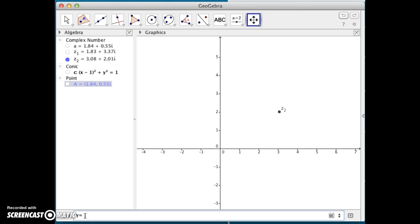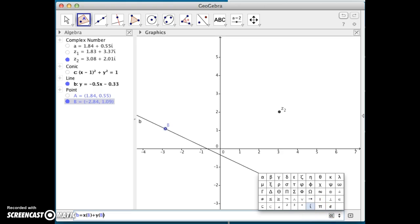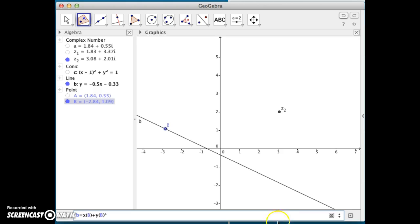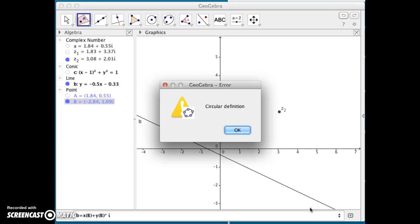It looked to me like it was negative one-half x minus one-third in the book. There's the line that looks sort of like that line. I'll put a point on that line. I'll transform that point into a complex number, or ask the computer to interpret it as a complex number. x-coordinate of B plus the y-coordinate of B times i.